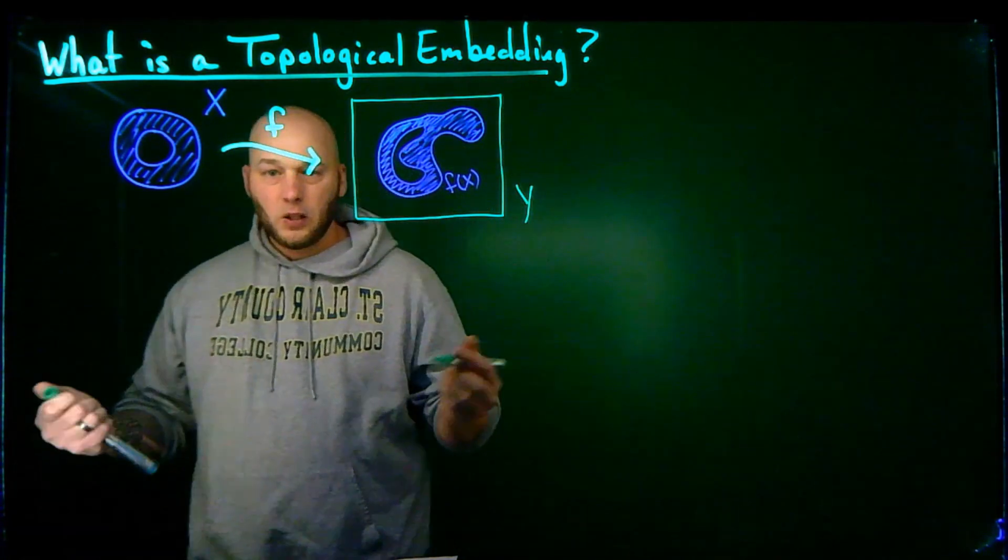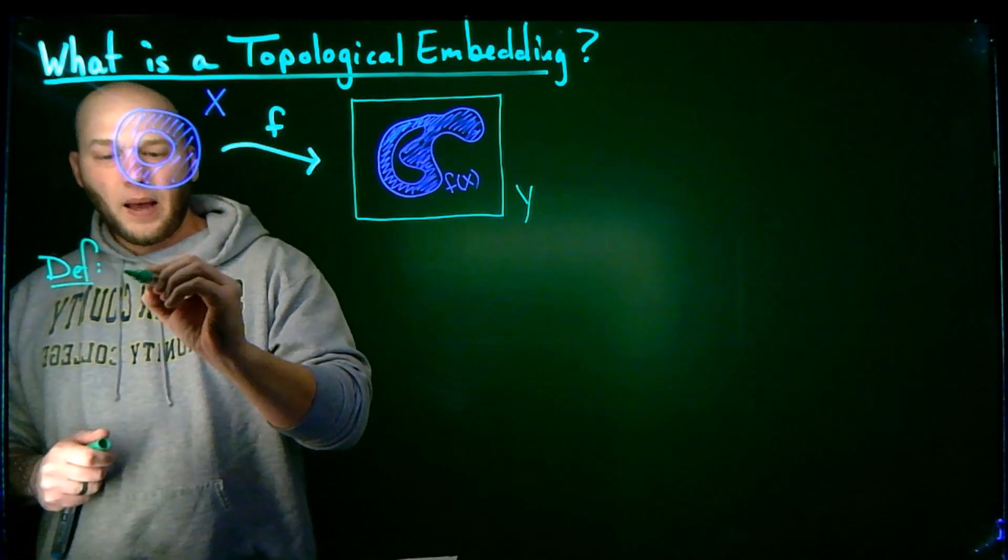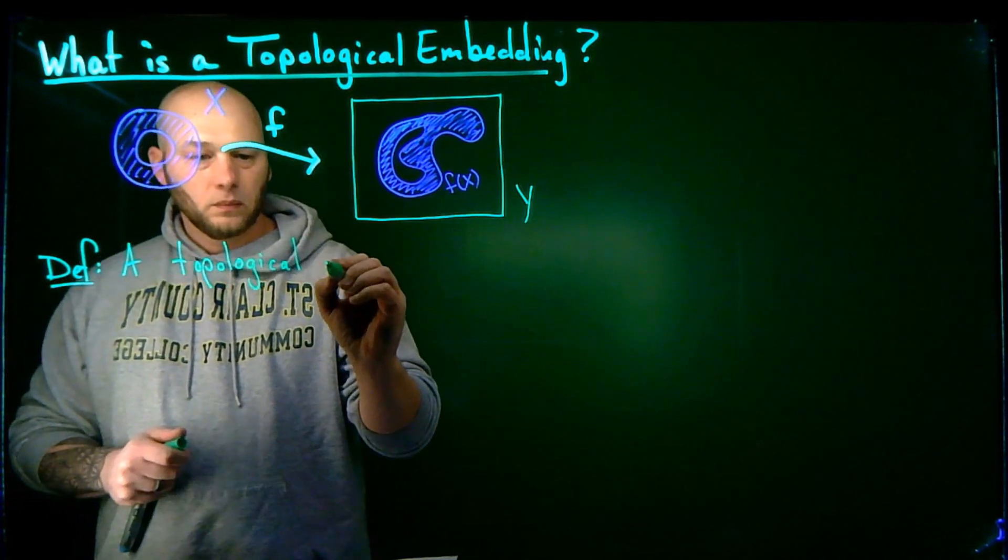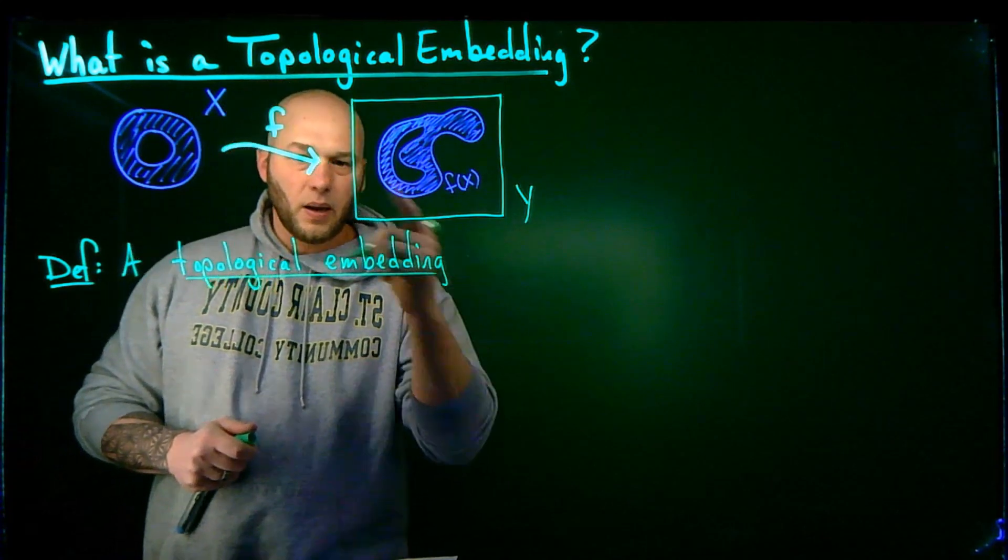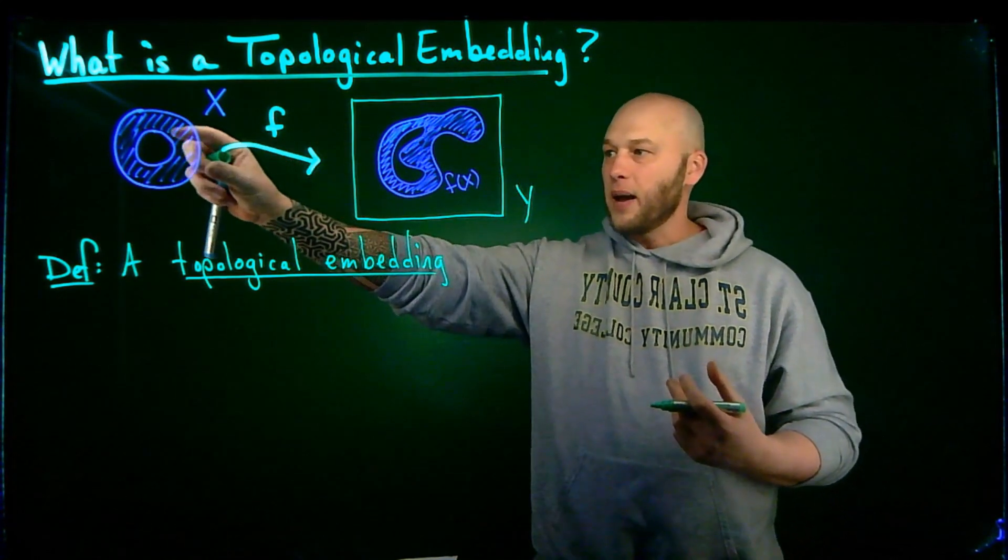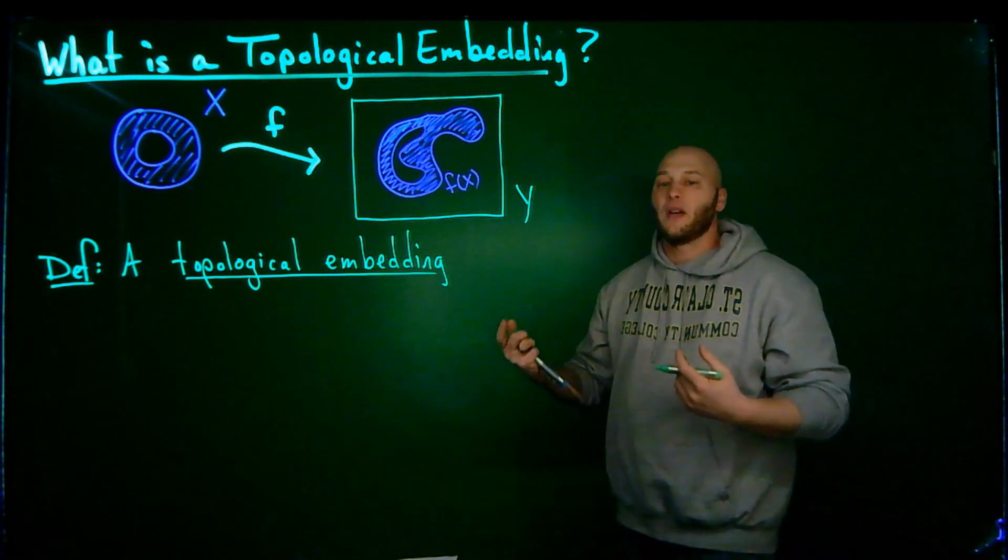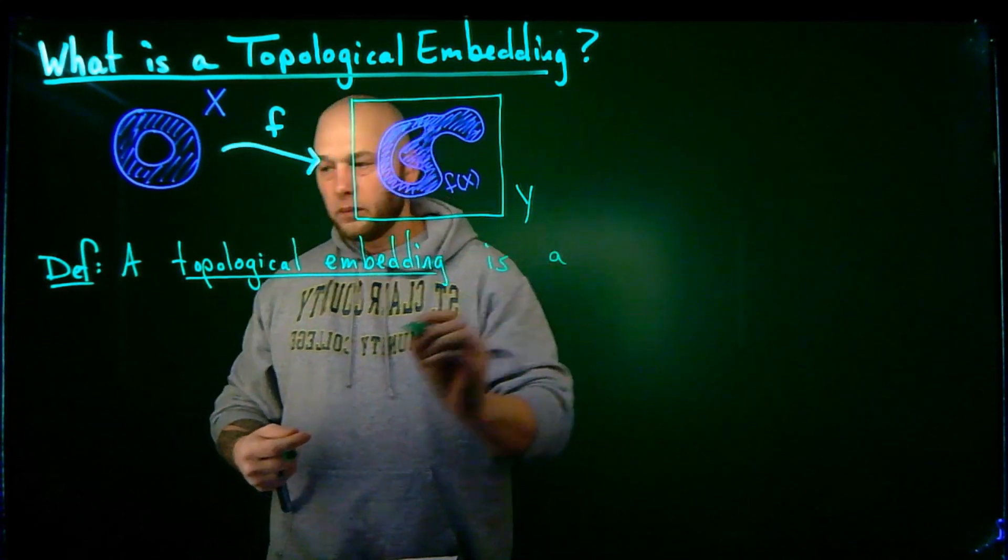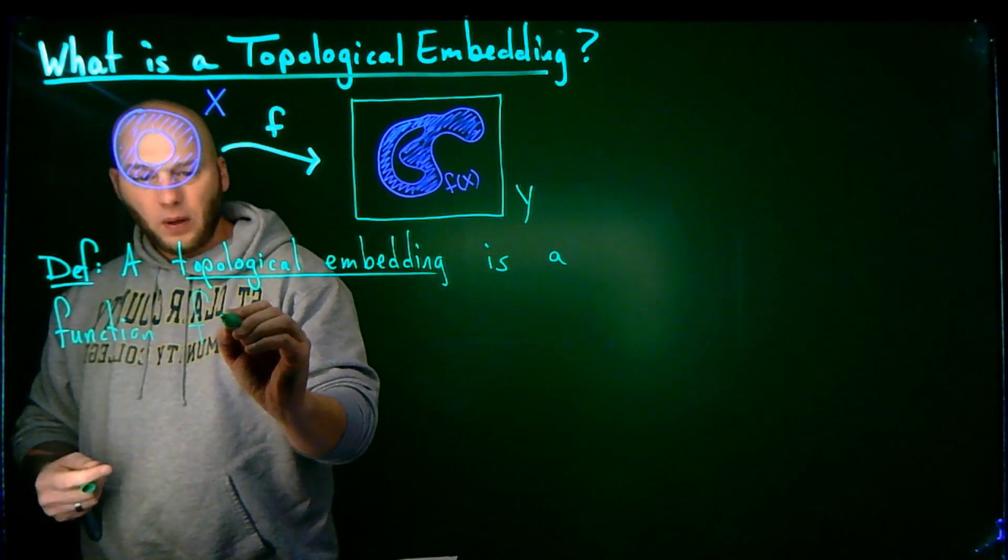But let's go ahead and give a specific definition for it, precise definition. So definition, a topological embedding. Now, if I use this, I'm going to use this example up here sort of as motivation for what it is. The topological embedding, now, visually, I kind of think, okay, well, I just take this object and I pop it inside of here. So, therefore, like, this image is the embedding. But really, the embedding is actually the function F. So a topological embedding is a function F which takes X to Y.